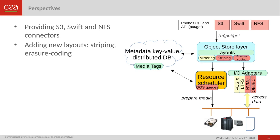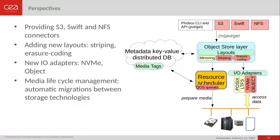In addition to existing layouts, we plan to develop new layouts such as striping and erasure coding. The IO adapters layer offers the possibility to add plugins optimizing IO on NVMe, for example, or on any other underlying object stores — including Phobos itself in a recursive schema. Media lifecycle management is also a very important topic: we want to implement automatic migrations between storage technologies, enabling HSM migrations between different tiers.